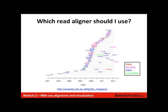Which read aligner should I use? This figure from a paper shows a huge number of different aligners developed for different applications. Each row represents a different aligner. The ones in red are the RNA-targeted aligners — STAR is one of the more recent ones, and TopHat is in there as well. There are also aligners geared towards microRNAs, DNA-based aligners, and bisulfite aligners. They try to keep this resource up to date so you can see all the different options.